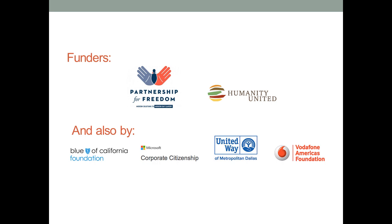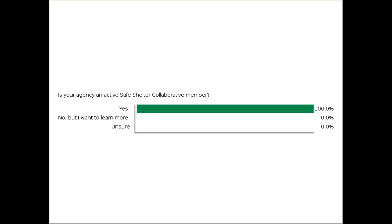We have two live polls to get a better idea of the agencies on this webinar. The first question is: is your agency an active Safe Shelter Collaborative member? Go ahead and click the response that best reflects your agency's situation. It looks like the majority — 90% of you — are already an active Safe Shelter Collaborative member. Thank you. Those of you who aren't, we will reach out to you after this webinar.